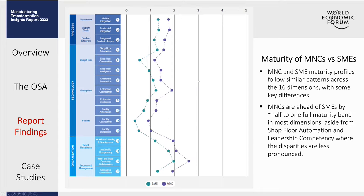Other benchmarks include a comparison between MNCs and SMEs. One interesting finding is that they follow a similar maturity profile, just maybe around half or one band maturity behind. The average SME and the average MNC are not too far apart in maturity. This gives us a good sense that there's much more that everyone can do in their digitization journey towards smart manufacturing — whether big or small, there are plenty of opportunities and room for improvement.